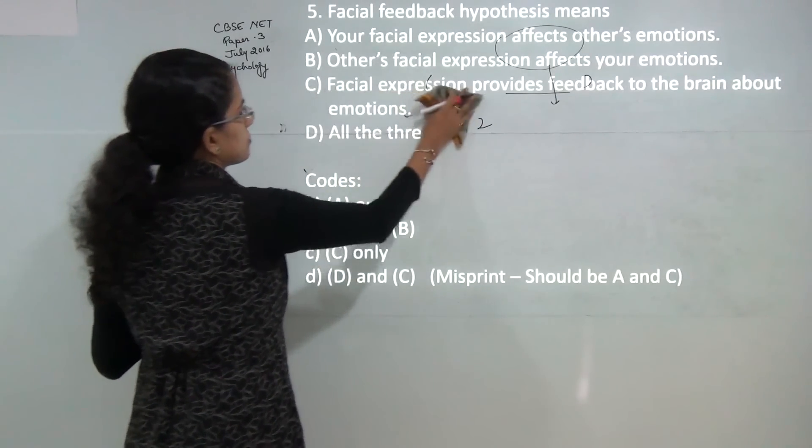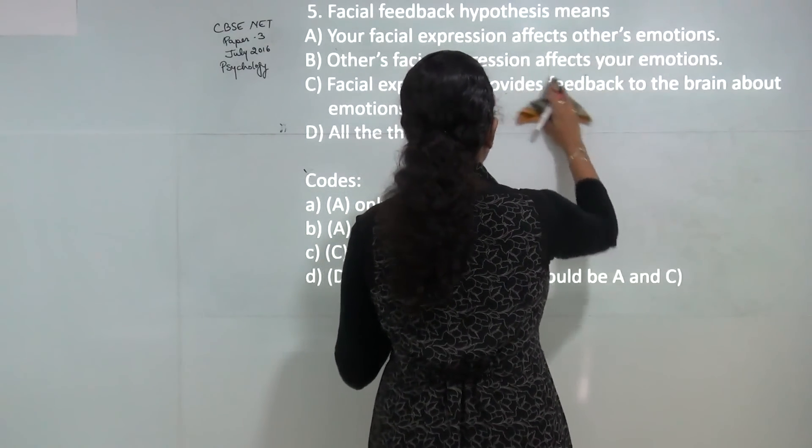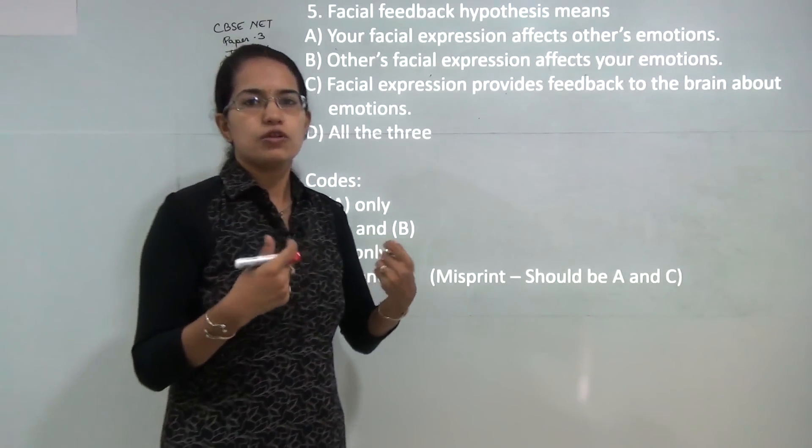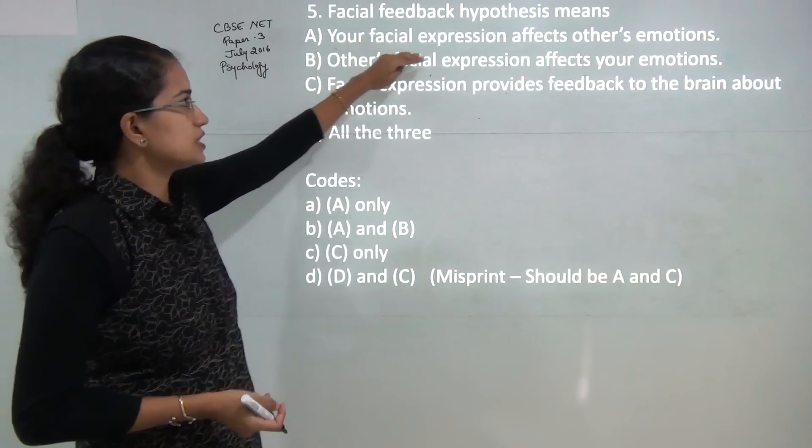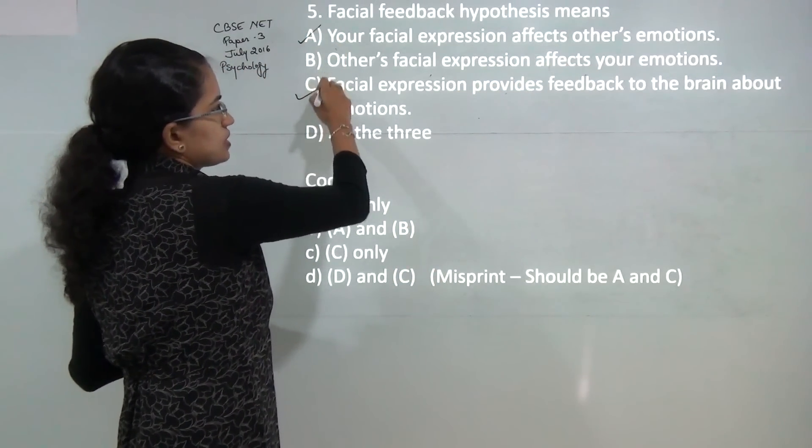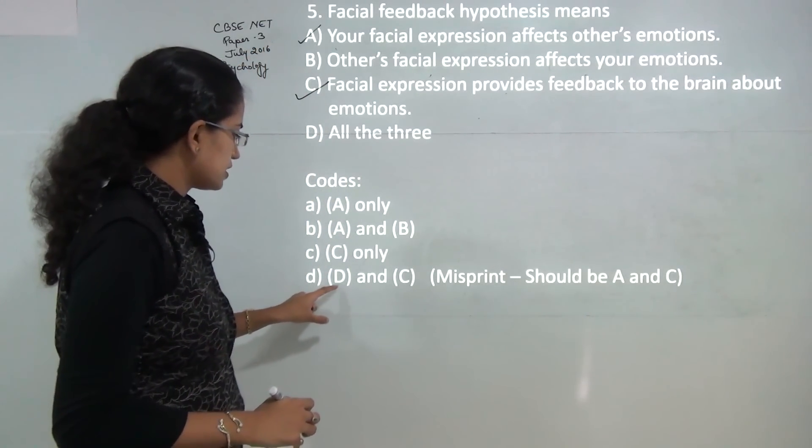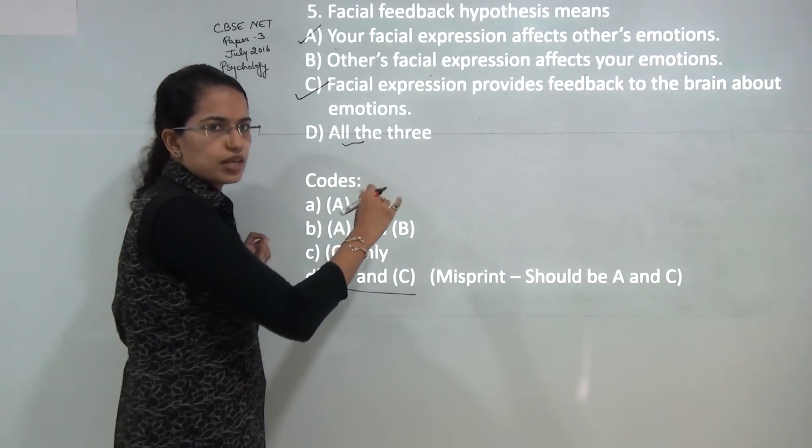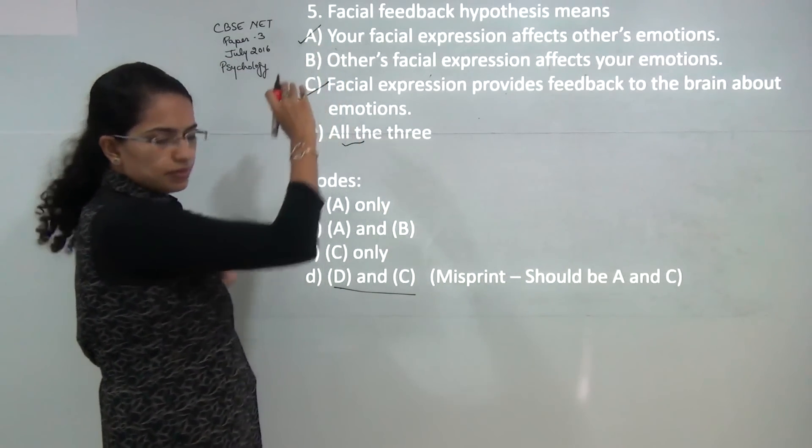Next: facial feedback hypothesis means your facial expressions affect others' emotions. Facial feedback hypothesis explains that if you are in a social situation and forced to smile, then ultimately you will feel good. So your facial expressions affect others' emotions and your facial expressions provide feedback to the brain about emotions. Both of these are correct. In the choices it has been incorrectly mentioned as D and C. There is a misprint here; it should be A and C.